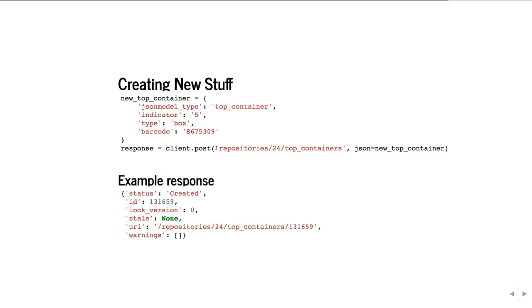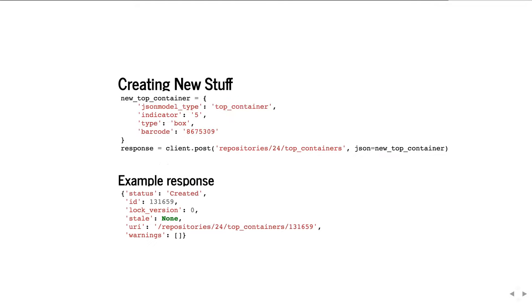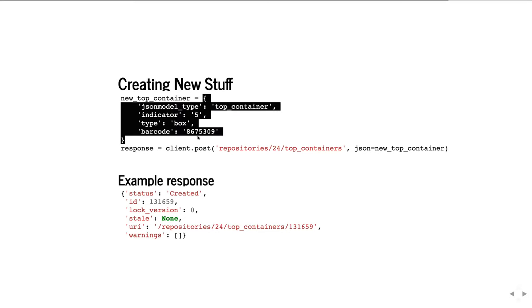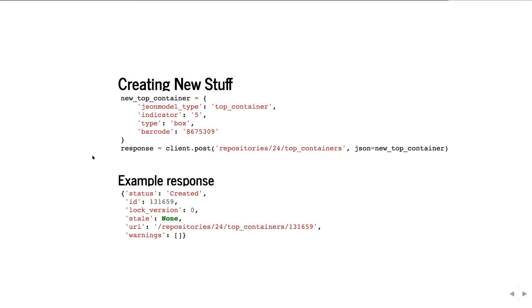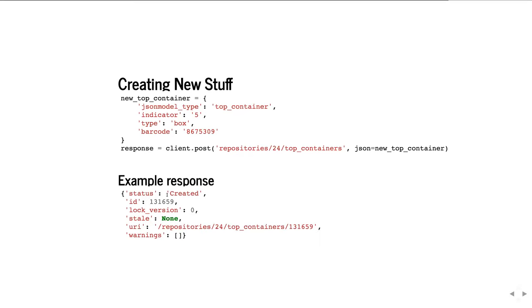To create new stuff, you post to the index route with an object that serializes to JSON with the fields you want in the final object in the system. What you get back when you post a create is an object that describes the status of what happened, gives you the ID and URI of the returned object, and tells you if there were any warnings. If it hadn't succeeded, you'd get back a similar response with a list of the errors that happened.